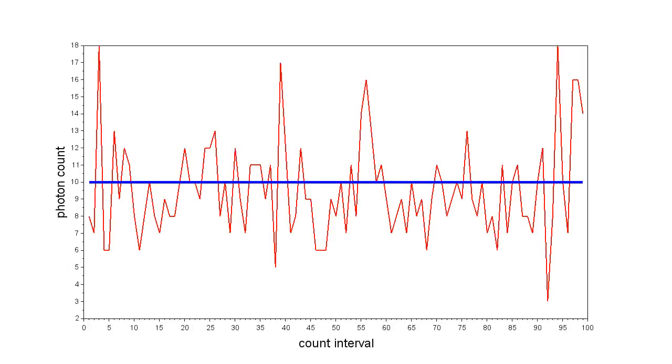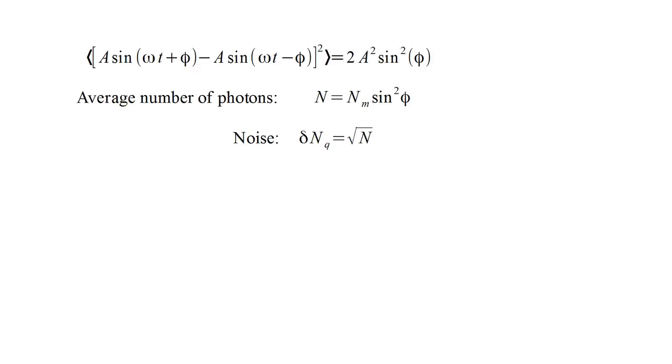So, over time, the photon count will vary about its average value. Since the fluctuations are due to the quantum nature of light, they are called quantum noise. Quantum noise fluctuations, which we denote by delta n sub q, vary as the square root of the average photon count.